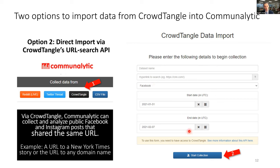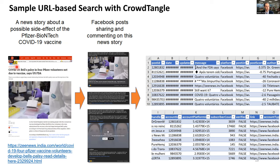For example, you can search for a news story about a possible side effect of the Pfizer-BioNTech COVID-19 vaccine. You paste the URL, choose the platform and time range — such as early 2021 — and start the collection. The resulting CSV will include post ID, date, the message itself, link to the original post, authors, and so on.